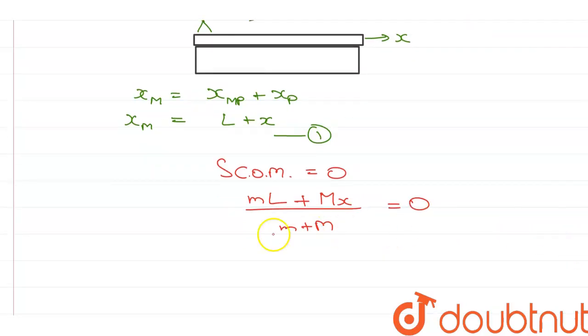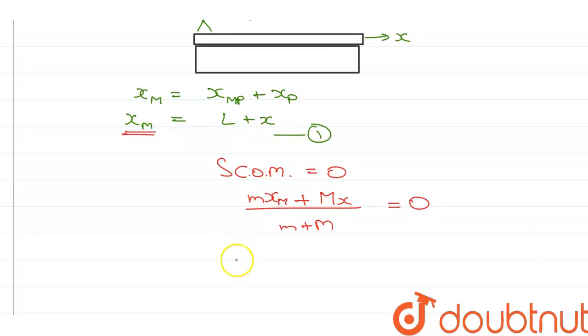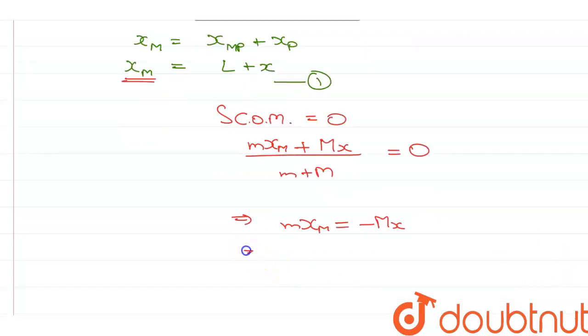Okay. This shouldn't be L because L is the displacement of the man with respect to the plank. So, with respect to the ground, we have given it the name x_m.